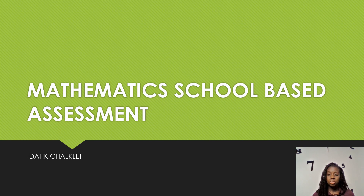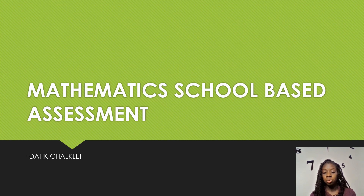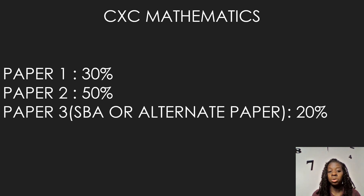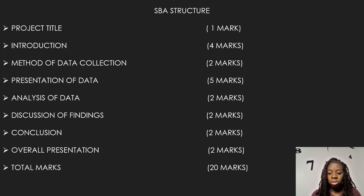Welcome back to the Dark Tube. Today we'll be deviating from the norm where I normally do math videos. Today I'll be doing the Mathematics School-Based Assessment outline as proposed by the CXC examination board. The CXC Mathematics outline is: Paper 1 is 30% of the grade, Paper 2 is 50% of the grade, and Paper 3, which is the SBA or the alternate paper, is 20% of the grade. This video is focusing only on Paper 3.